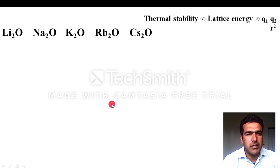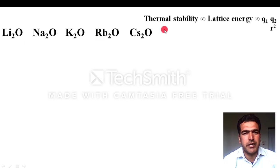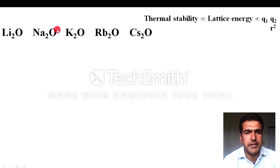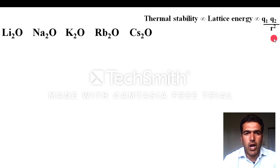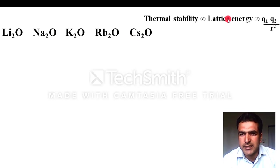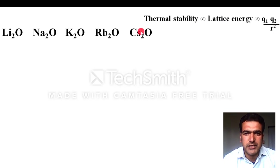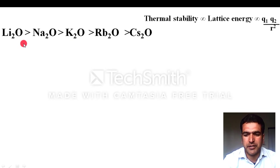Another example: the oxides of Group 1 — lithium oxide, sodium oxide, potassium oxide, rubidium oxide, and cesium oxide. The anion here is oxide, which is monoatomic. For monoatomic anions, thermal stability is proportional to lattice energy, given by Q1·Q2/r². As you move from lithium to cesium, r goes on increasing, so lattice energy decreases and thermal stability decreases. Therefore, Li2O is most stable.